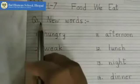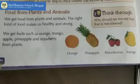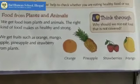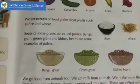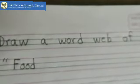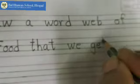Children, you have all written question number one — new words — in your notebook. Now you will turn to a new page and write question number two. Yesterday we learned about the sources of food, so in today's class we are going to do the notebook work. Question number two is: draw a word web of food we get from plants.